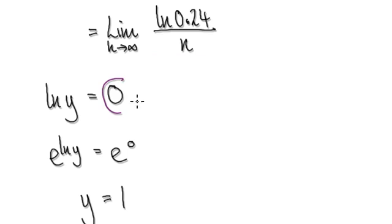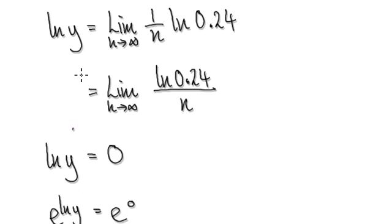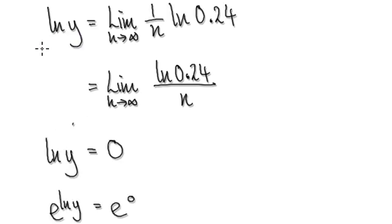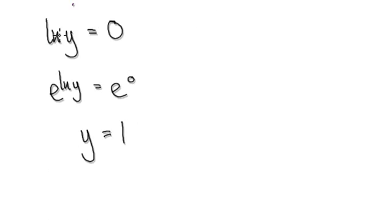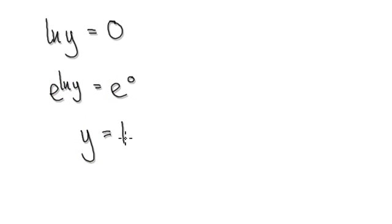The limit is 0, so we have natural log of y equals 0. Don't forget, it's y that we're trying to find. We were trying to get y on its own all along. So from here, exponentiate both sides — that gives you e to the power of 0 on the right, and these two cancel each other out, giving you y. And e to the 0 is 1, so the limit is 1.